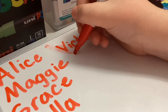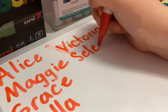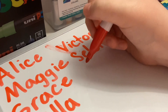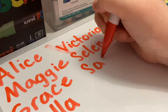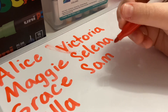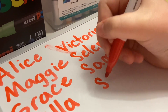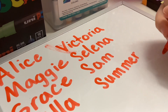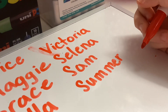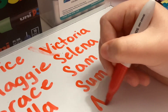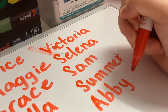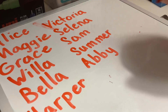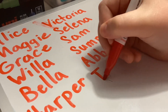And then next is Selena, which is S-E-L-E-N-A. Selena. And then next is Sam, which is S-A-M. And then next is Summer, which is S-U-M-M-E-R — it's just like the season. Next is Abby, which is A-B-B-Y.